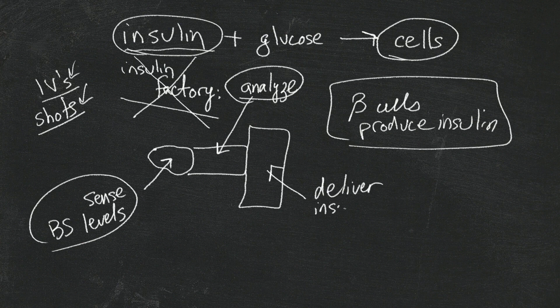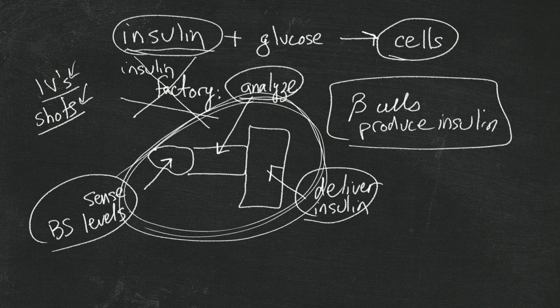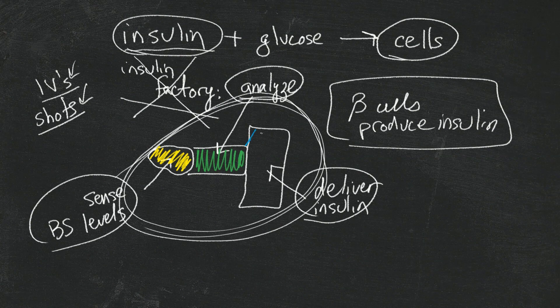In terms of seamlessness, that system works 24 hours a day, seven days a week — that is absolutely miraculous. For those of us who have type 1 diabetes, this is the thing that's broken down. We now have to be the sensor, we have to be the analyzer, and we have to be the deliverer. We have to take over the role of those beta cells.